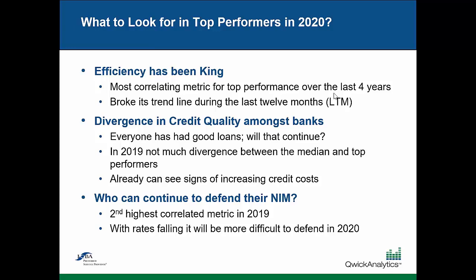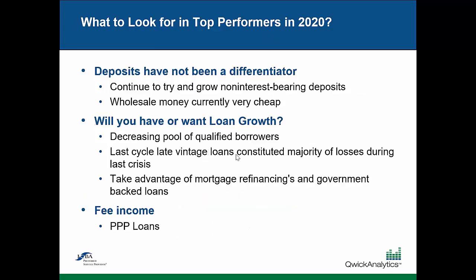So what do I think about 2020? Efficiency has been king and I think will remain king — it's been the most correlating metric for top performance and I don't think that will change. It may not be the most highly correlated metric, but it's certainly going to be a key component. I think this year the divergence in credit quality will probably be a big indicator. Over the past three or four years, really no one had significant credit costs — that probably changes here and is likely a pretty big determinant of performance for the next year or two. Who can defend their NIM? With rates falling it will be harder to pass on loan yields, but those who can maintain or even expand their NIM will probably be best positioned for top performance in 2020.